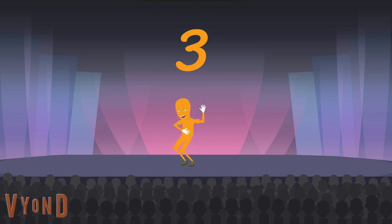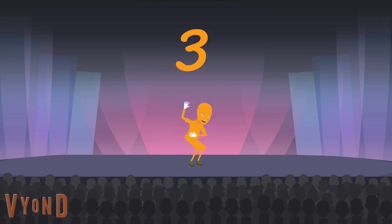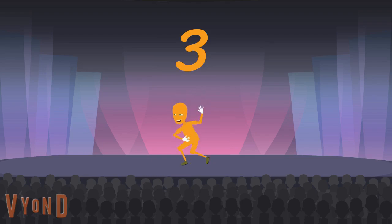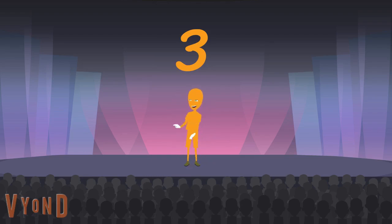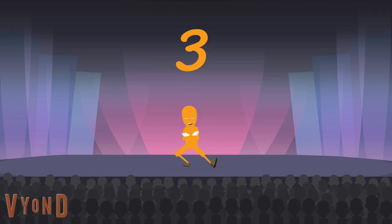Three colored traffic lights mean stop or wait or go. The number 3 just tickles me, I gotta let it show. Hip hip hooray! Hip hip hooray! Three cheers for three.